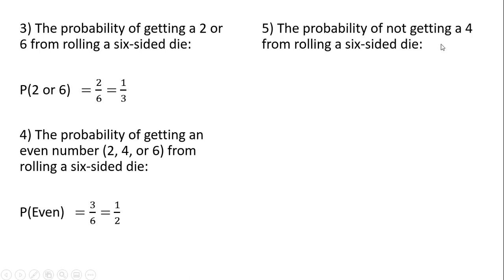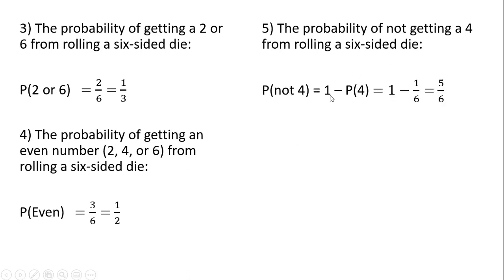The probability of not getting a 4 from rolling a 6-sided die. The probability of not getting a 4 is going to be 1 minus the probability of getting a 4. Getting any specific number has a probability of 1 sixth, so this simplifies to 5 sixths.